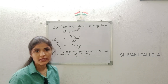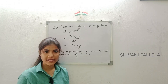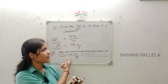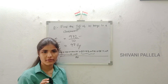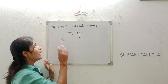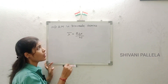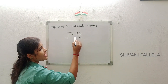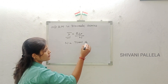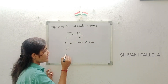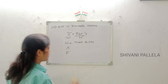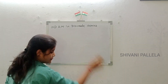Now we will discuss arithmetic mean in discrete series using the direct method. We have completed individual series — the formula was sum of observations by number of observations. For discrete series, the formula for arithmetic mean is: x̄ = σfx / n, where n is the total of frequencies. In the question, both x and f will be given; you just need to calculate f × x.